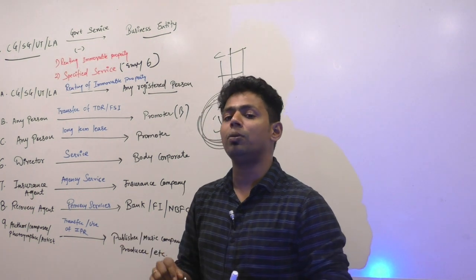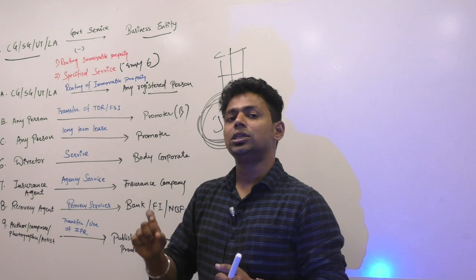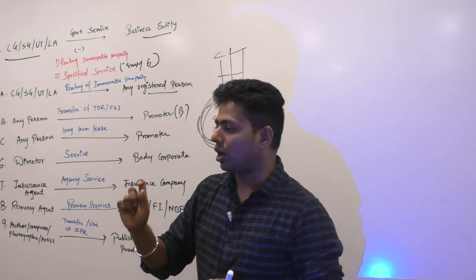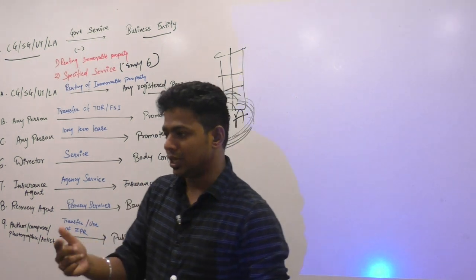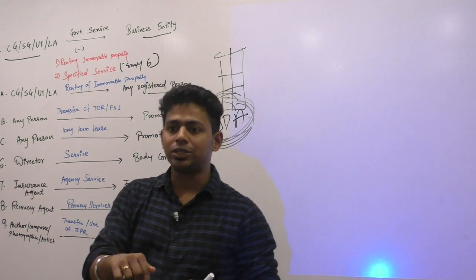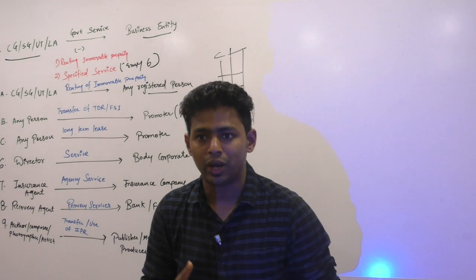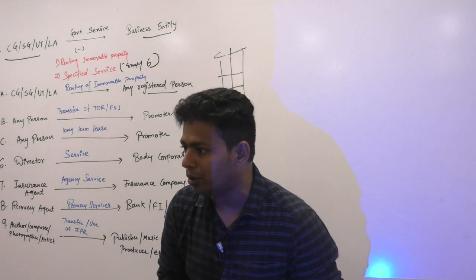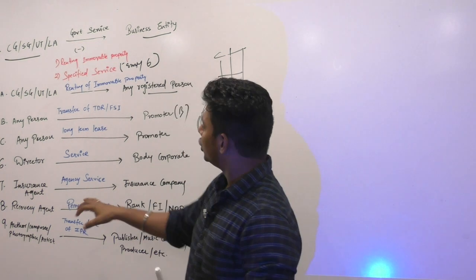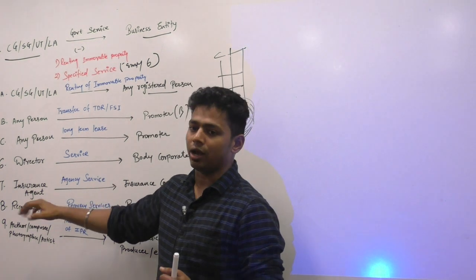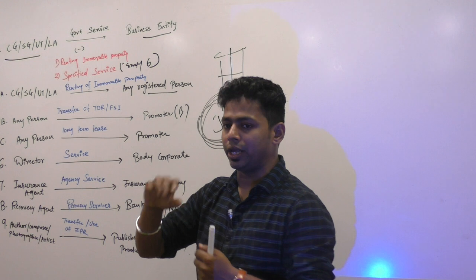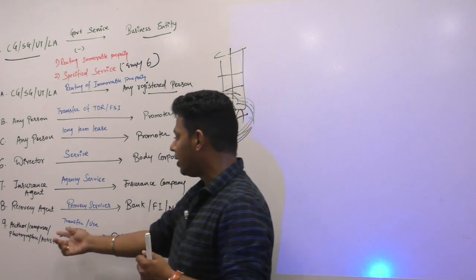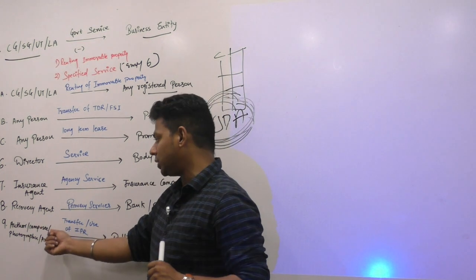There is something called business correspondents and business facilitators — if it is there in your syllabus I will teach you. I have to check from your module. So one more agent will come in banking company — business corresponding agent. So there are three agents now.